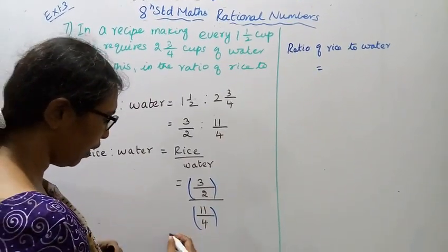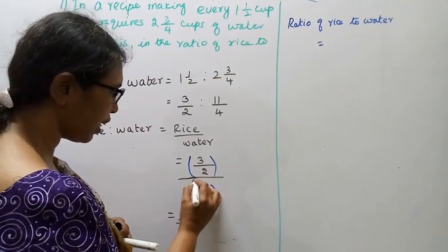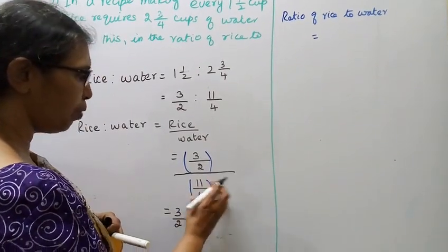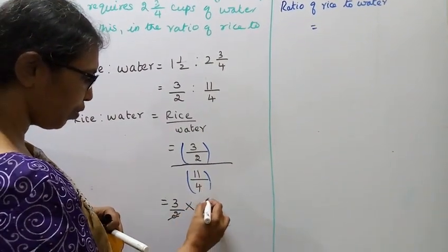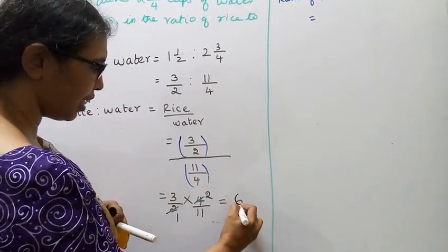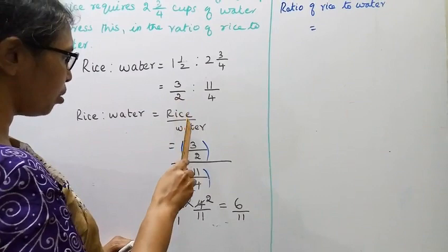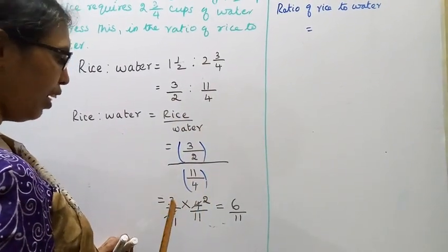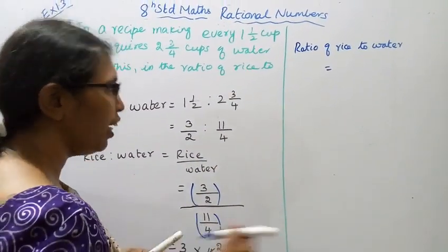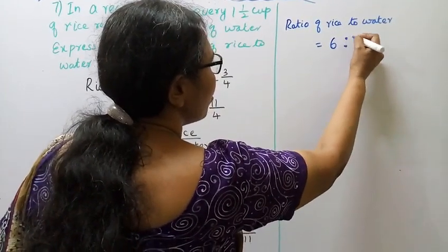Rice by water: 3/2 divided by 11/4. Division means reciprocal, so 3/2 multiplied by 4/11. 2 ones are 2, 2 twos are 4, 3 twos are 6, giving 6/11. The ratio of rice to water is 6 is to 11.